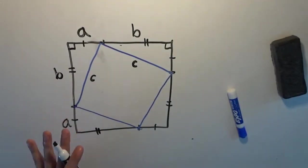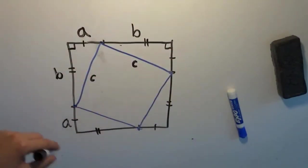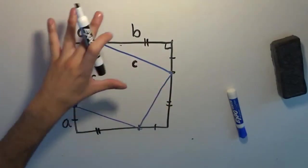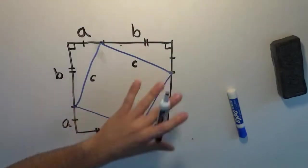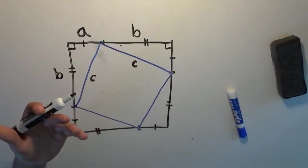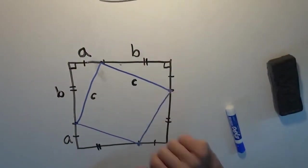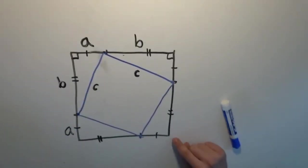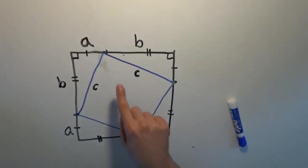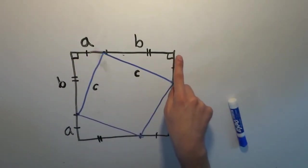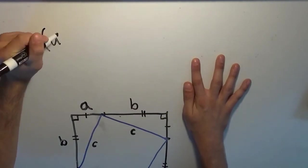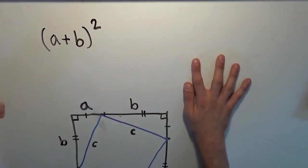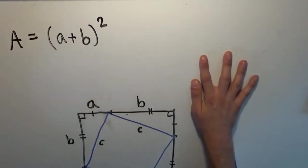You may ask: how does this help prove the Pythagorean Theorem? The key to this proof is to write the area of this large square in two distinct, independent expressions. Because they both represent the area of the same large square, those two expressions have to be equal to each other. First: the side length of the big square is A plus B, and so is the other side — it's a square. So I can write the area of this square as (A plus B) squared.